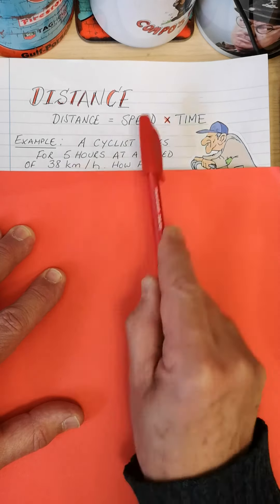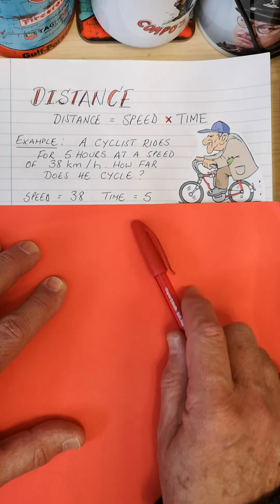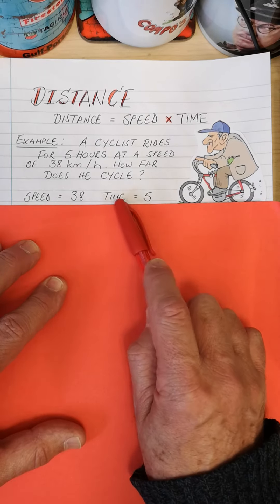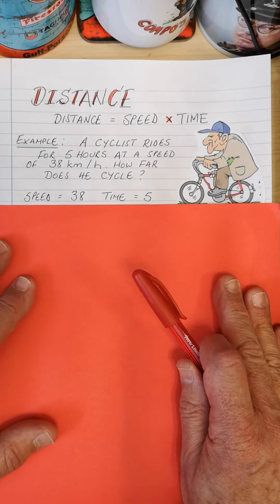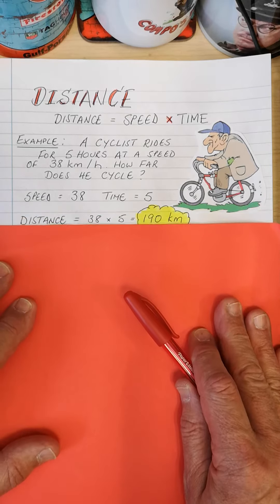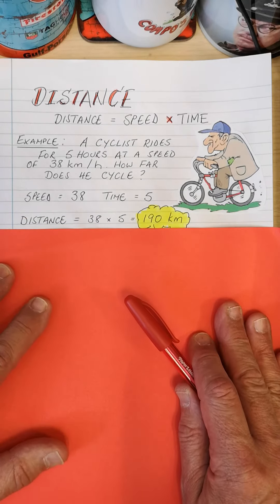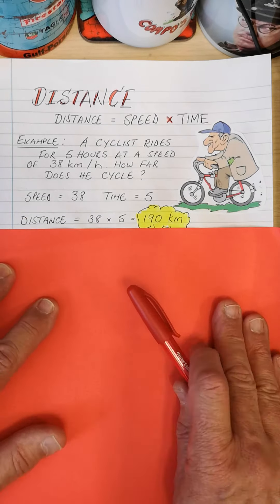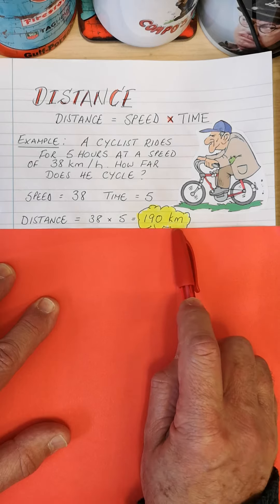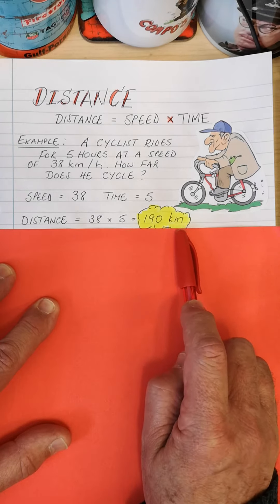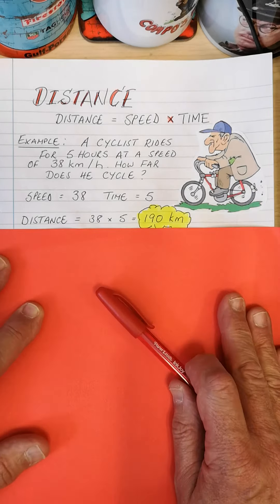Let's have a practical example. A cyclist rides for five hours at a speed of 38 kilometers an hour. Highly unlikely looking at that old chap. A cyclist rides for five hours at a speed of 38 kilometers an hour. Multiply those two and you'll get your distance. The question says, how far does he cycle?